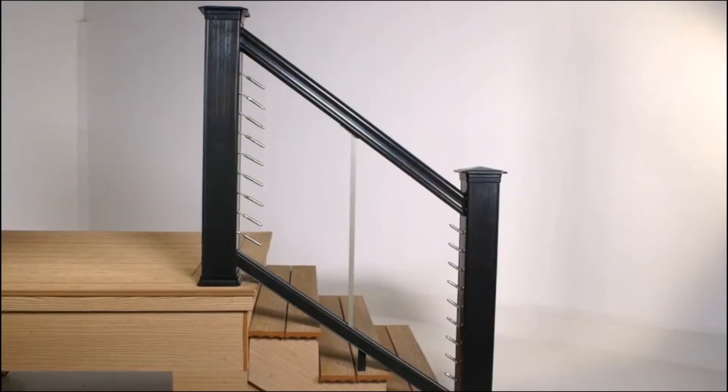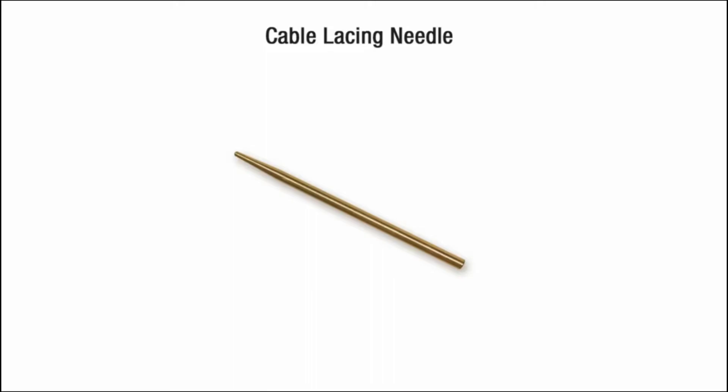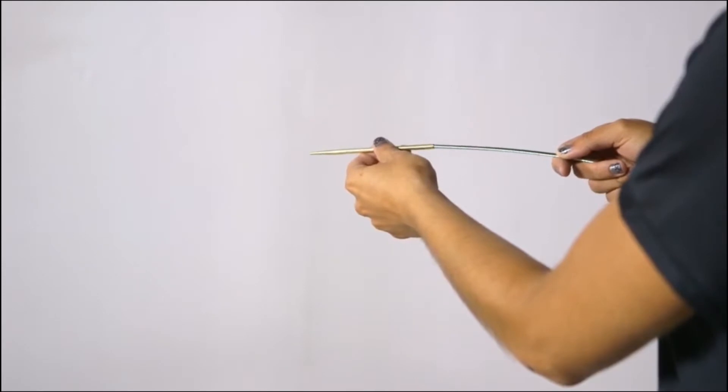When all of the fittings are in place, we can begin installing the cables. Start at the top stair post with the Quick Connect lag swivel turnbuckles. We recommend using our cable lacing needle for threading cables through intermediate posts and pickets. The lacing needle prevents the cable from snagging on post holes.